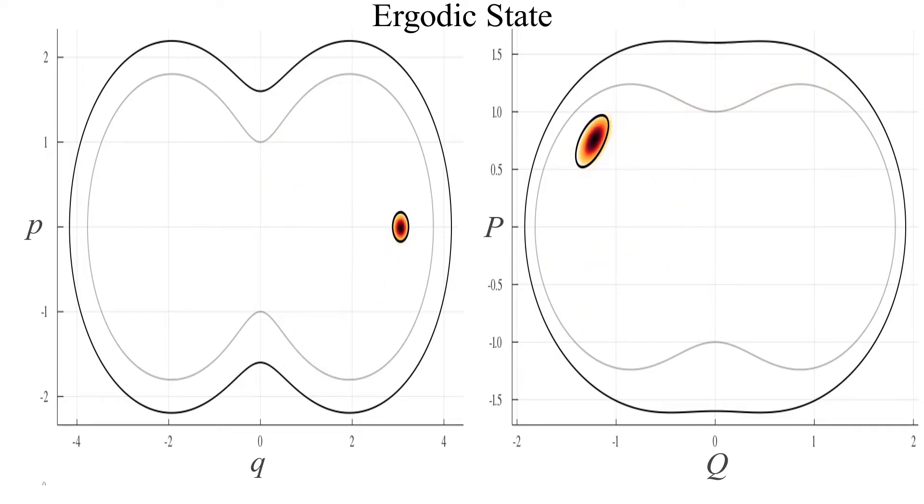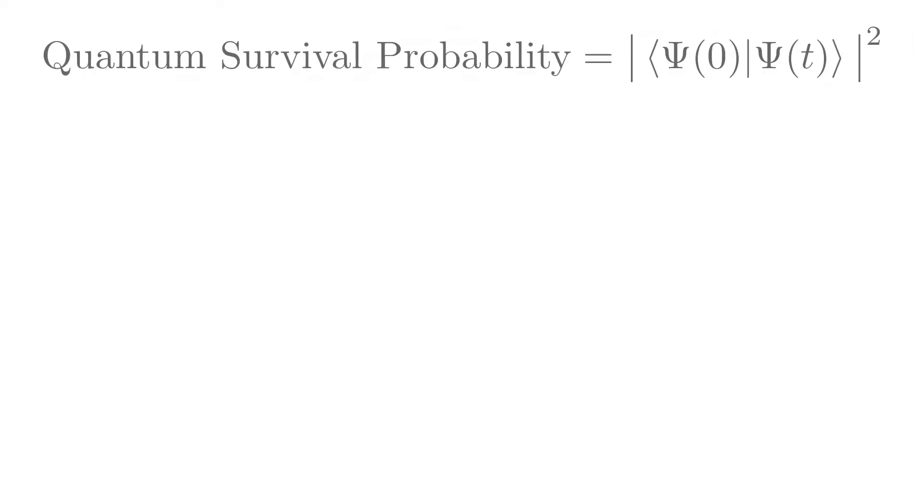Now, we show how our quantum analysis is done. The quantum survival probability is the square norm of the overlap of an initial state with itself at a later time.